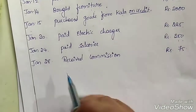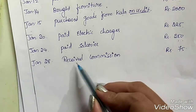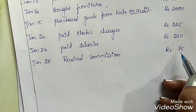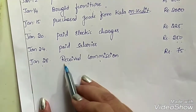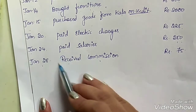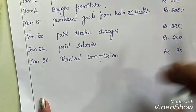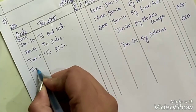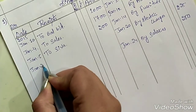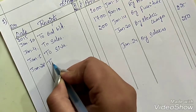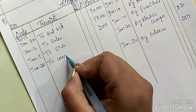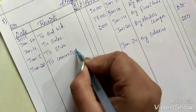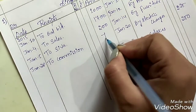The last transaction: on January 28th, received commission Rs. 75. It is clearly given that we are receiving commission, so take it on the receipt side. Entry: January 28th, to commission, Rs. 75.